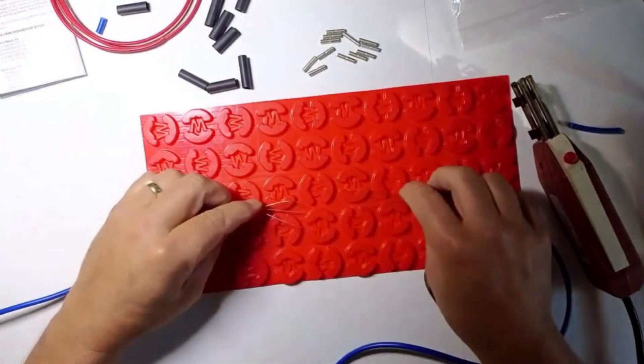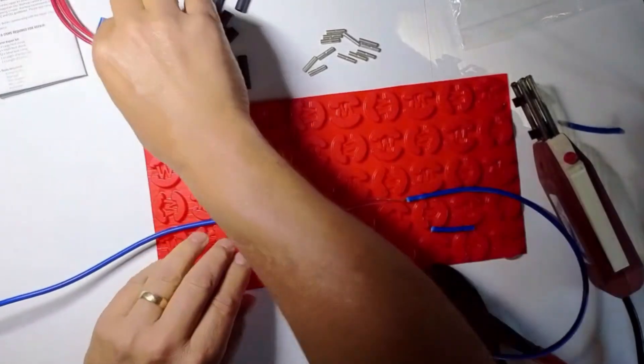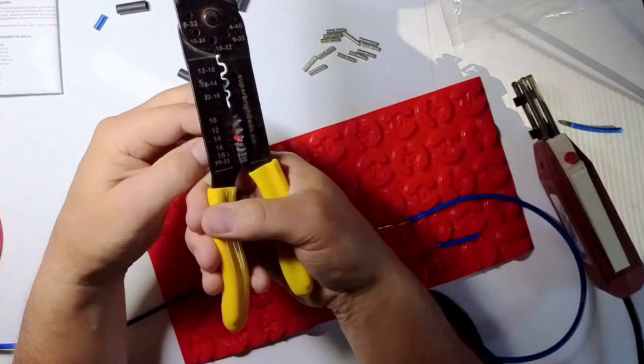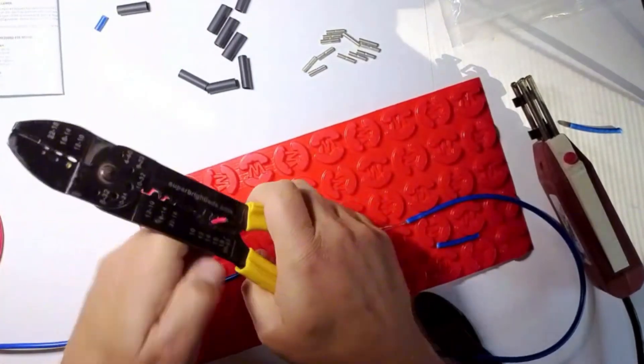If I can't splice it and it's here, I have to jump it. I need to cut a piece of my cable. So here I'm just taking, I'm using 14-gauge stripper.